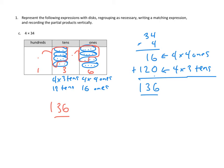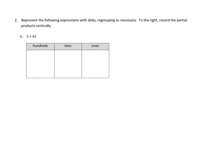Now having done 1c, 1a and 1b should be somewhat easier for you. Let's move on to problem number 2. I've again chosen the more difficult of the two problems. The directions: represent the following expressions with disks, regrouping as necessary; to the right, record the partial products vertically. So we have 5 times 42. Over here on the place value chart we need to represent 42 — that's 4 tens and 2 ones. And over here on the side, that's 42. And on the vertical method, we're going to use 42 times 5, and we need to make 5 sets of 4 tens.